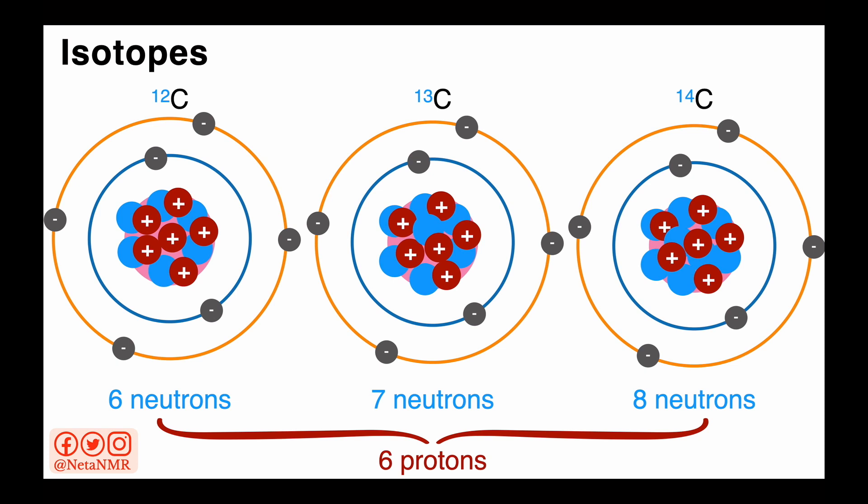Let's have a look at one more element, carbon. Like lithium and many other elements, carbon also has many isotopes. Here I'm showing three of the carbon isotopes. Carbon 12 has 6 neutrons, carbon 13 has 7 neutrons, and carbon 14 has 8 neutrons in the nucleus.